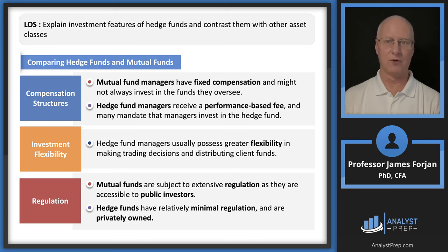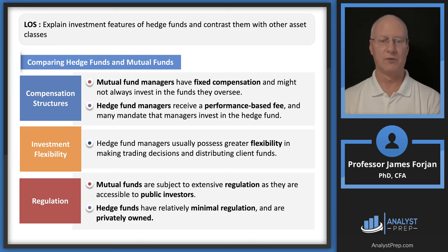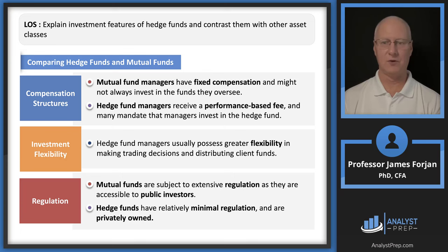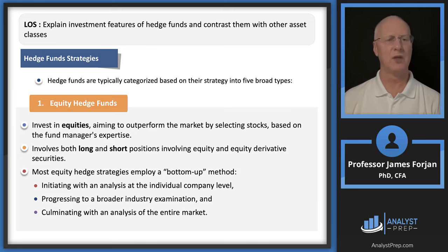Another key difference: you and I can own a mutual fund and move money whenever we want, but hedge funds have more restrictions. They have a huge initial investment — the Vanguard 500 index fund might cost $2,000-3,000 to enter, but Jim's hedge fund might cost $20 million. These are privately owned, not publicly traded, and you can't get in and out whenever you want. That's probably another good exam question.